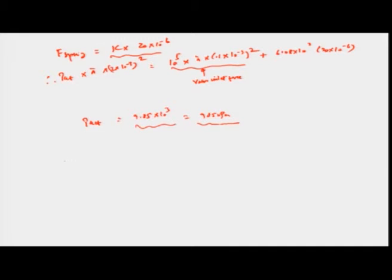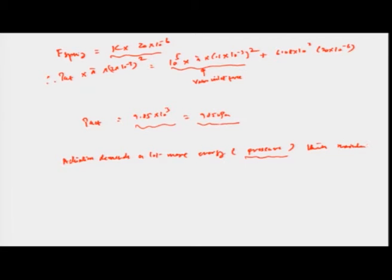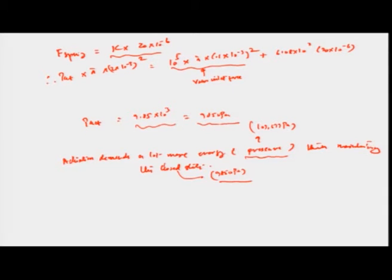It is very clear that actuation demands a lot more energy — about 109,677 Pascals — whereas maintaining the closed state demands only about 9850 Pascals. This is true for all actuator systems: the start of actuation almost always requires more energy to be pumped in than the end of actuation.